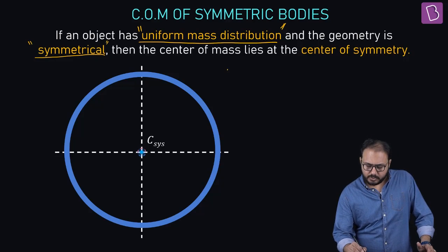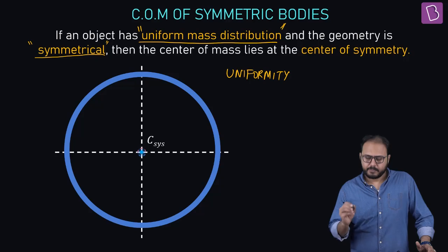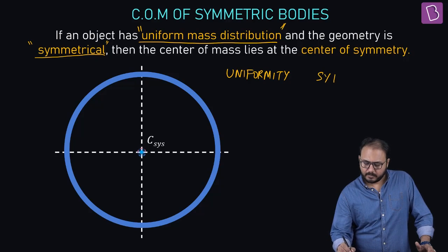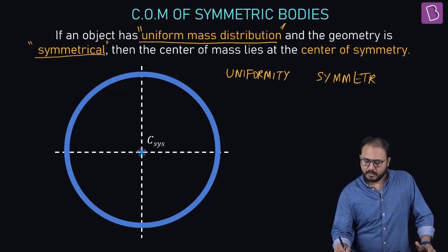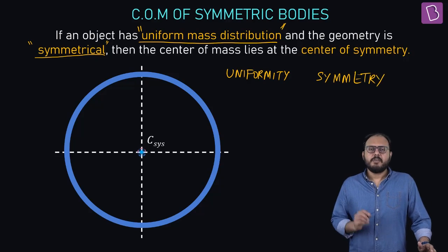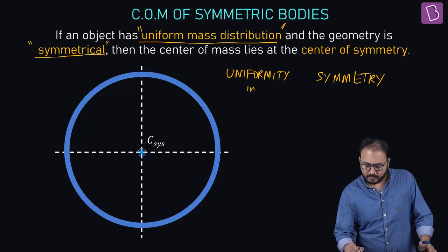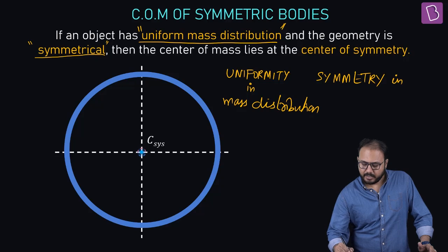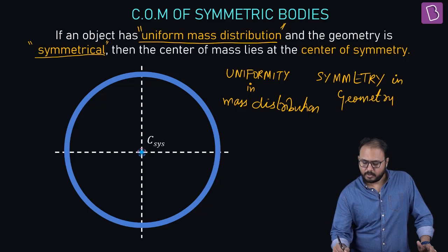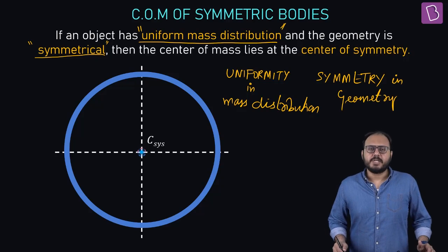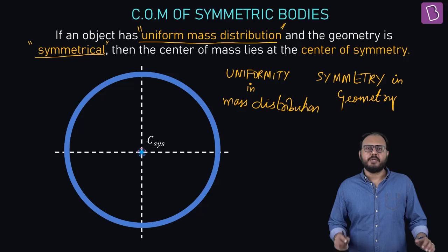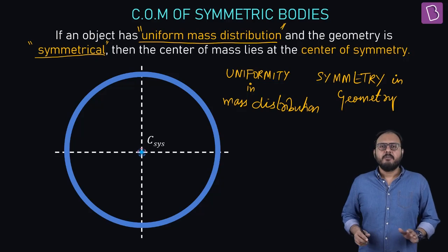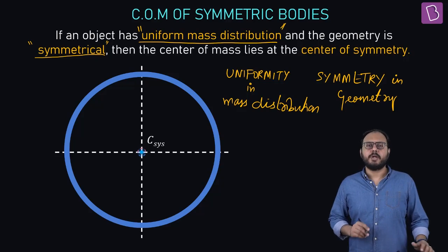And the geometry is symmetrical. That means uniformity, symmetry. If you have uniformity in mass, in mass or rather mass distribution, and symmetry in geometry, if these two qualities are present, uniformity in mass and symmetry in geometry, then the center of mass will be whichever point you think is the most symmetric point or center of symmetry.